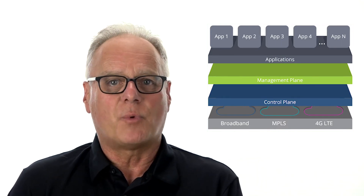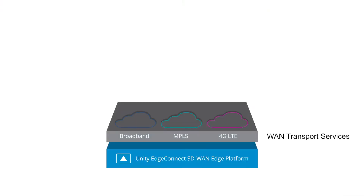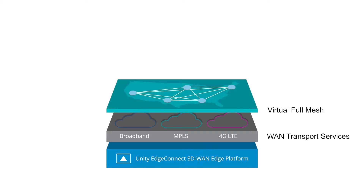Here's where some of the architectures differ, so I'll now be referring to the Silver Peak SD-WAN implementation. Our implementation virtualizes all of the WAN services and treats them as a single resource pool. We then create virtual WAN overlays that we call business intent overlays, which define the quality of service and security policies for groups of applications according to business requirements.